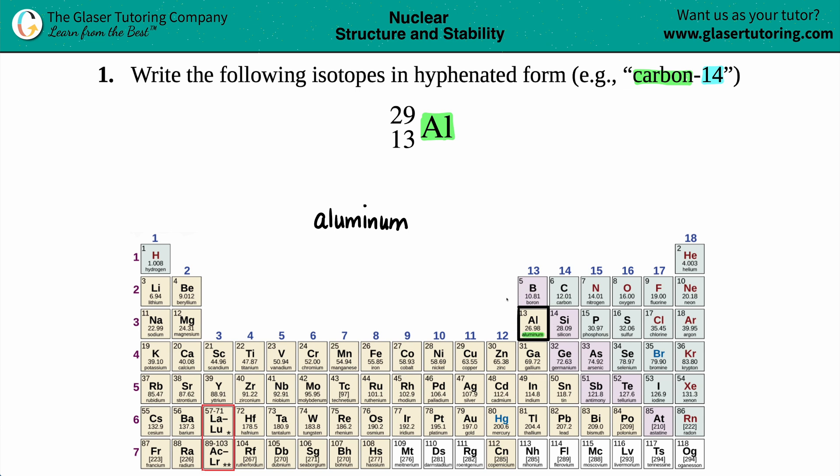So that's a good party starter, right? Anyway, we have aluminum for Al. And now we just need to find out that number. For hyphenated notation, that number is always the atomic mass, not the atomic number.